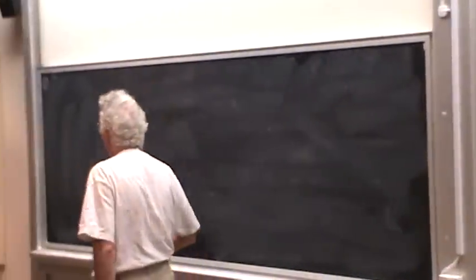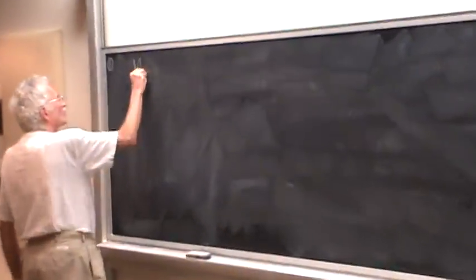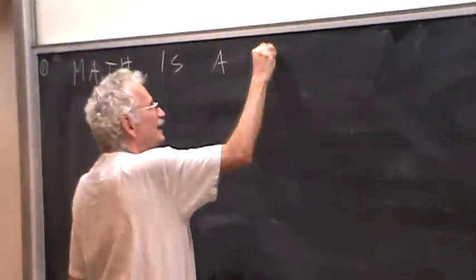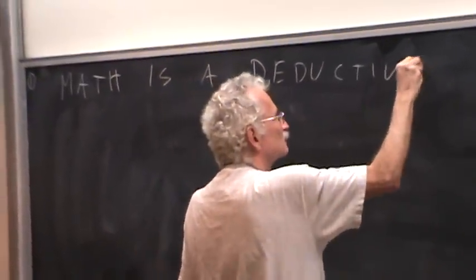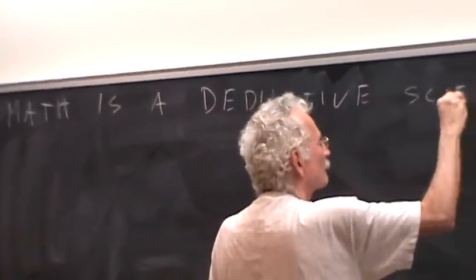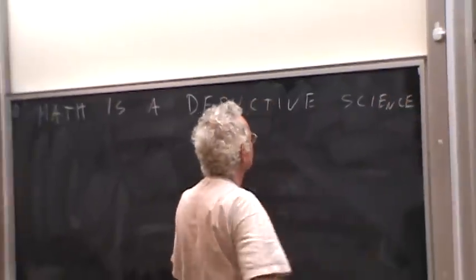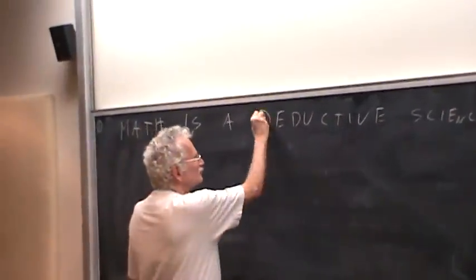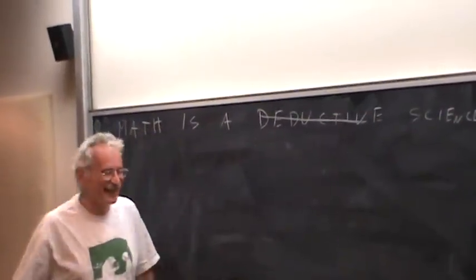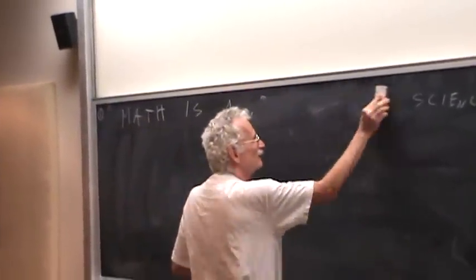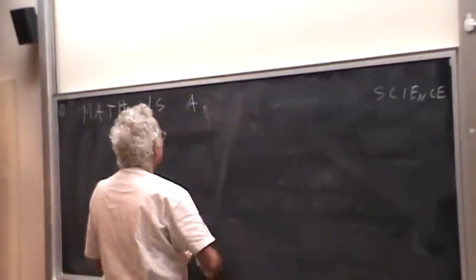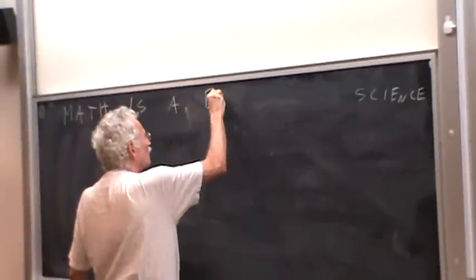True or false? Mathematics is a deductive science. What do you think? False! It is an empirical science. At least it should be a completely empirical science. So that's the first thing I want to emphasize.